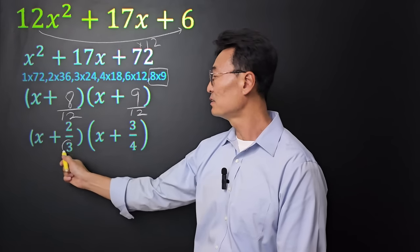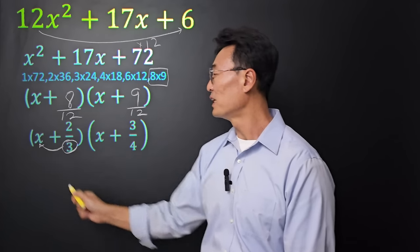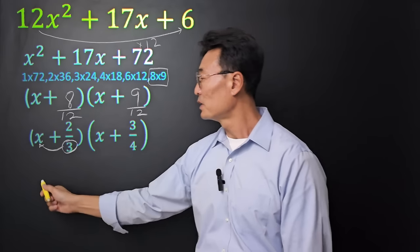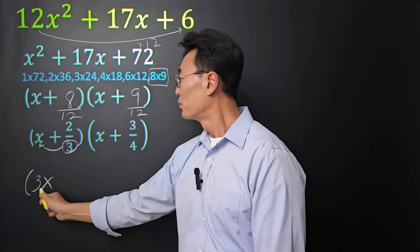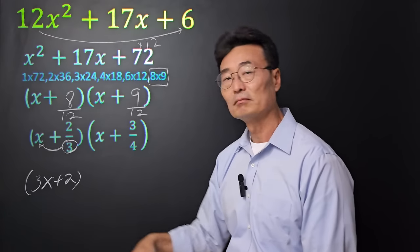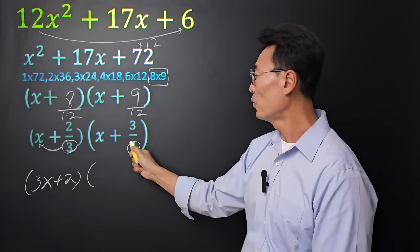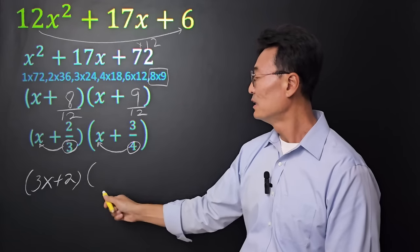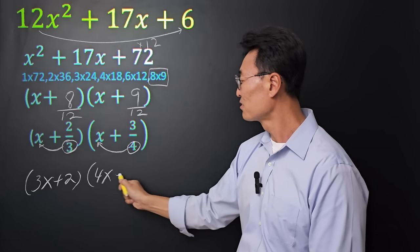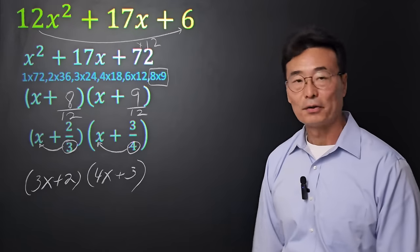To complete, all we have to do is take the denominator, multiply it to the x. Take the 3, multiply it to the x, giving us 3x plus 2. Next, we're going to take that 4, multiply it to the x, giving us 4x plus 3.